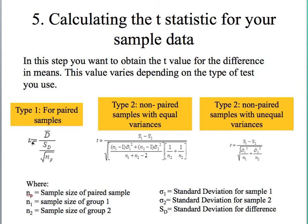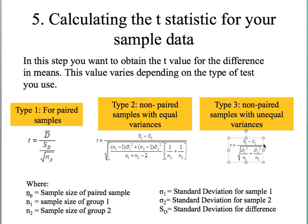This is how you would obtain your t-statistic if you're using a type 1 test for paired samples, where d is the difference in the matched sample, this is the standard deviation for the difference, and this is divided by the square root of the sample size for the paired sample. For type 2, non-paired samples with equal variances, you would use this formula, where x̄1 is the sample mean for group 1 and x̄2 is the sample mean for group 2. For type 3, non-paired samples with unequal variances, you would use this formula.